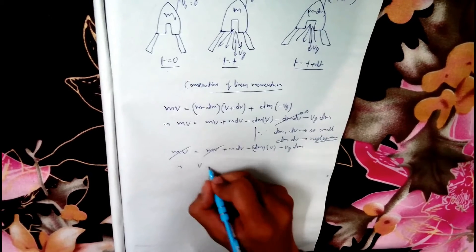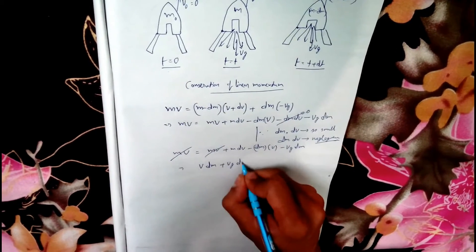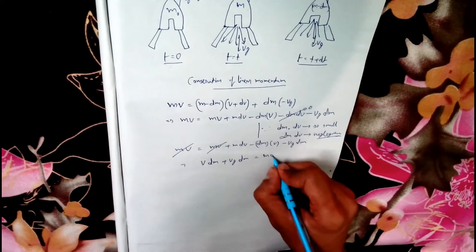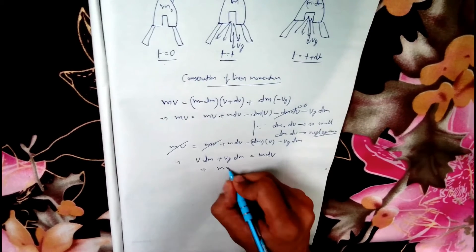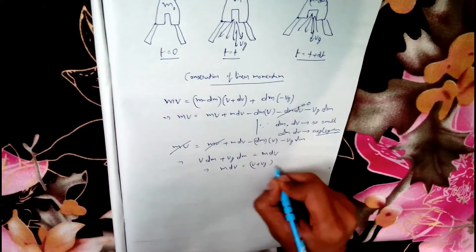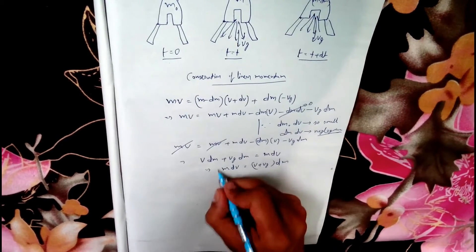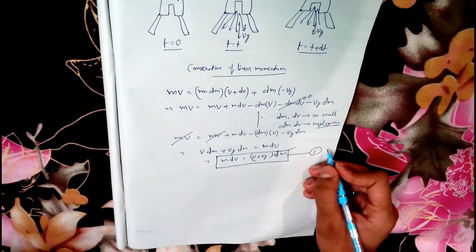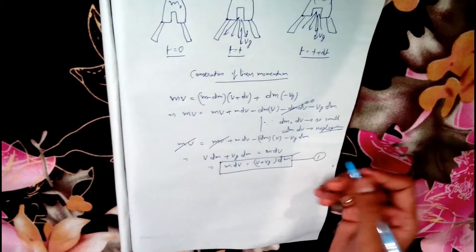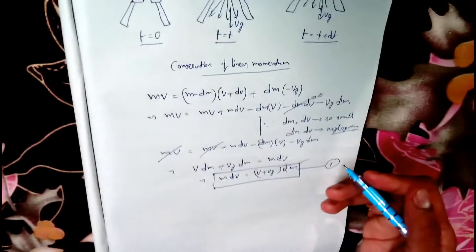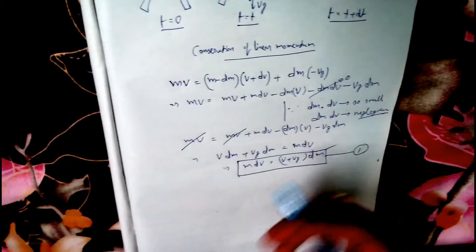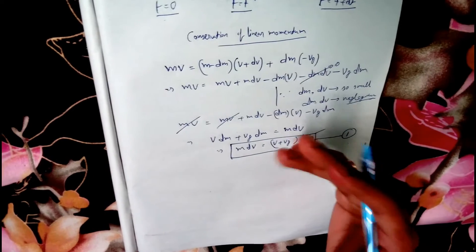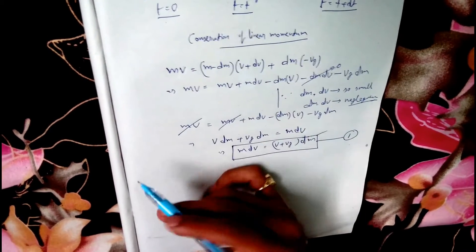These two mv terms cancel. We are left with m·dv equals v·dm plus vg·dm. This gives us the first equation. Now, when the rocket has gone far away from the earth, the velocity of the exhaust gases with respect to the earth becomes irrelevant. We can instead take the relative velocity of the exhaust gases with respect to the rocket.